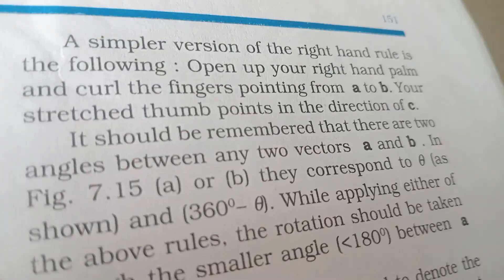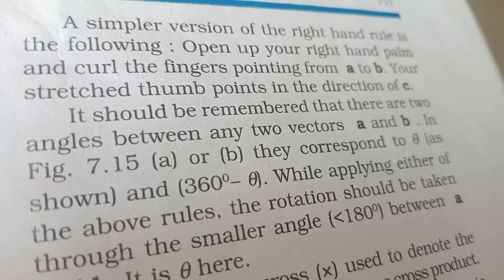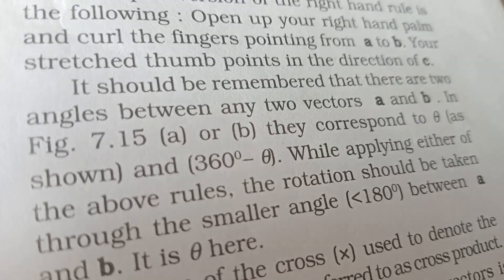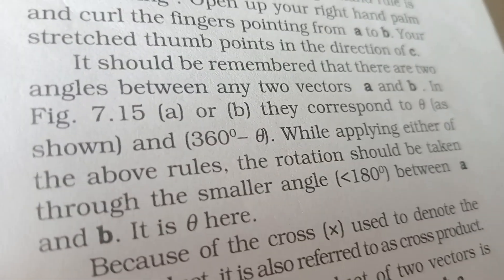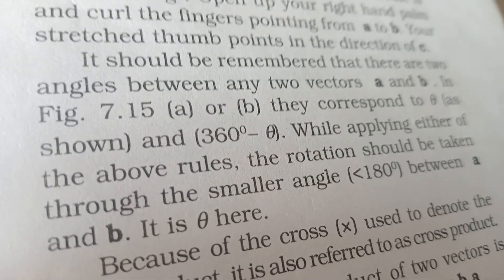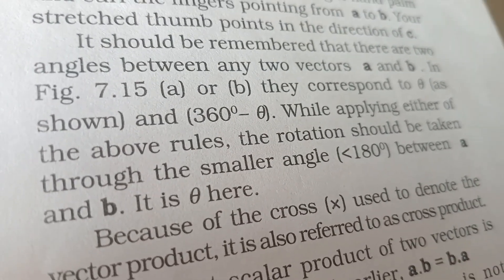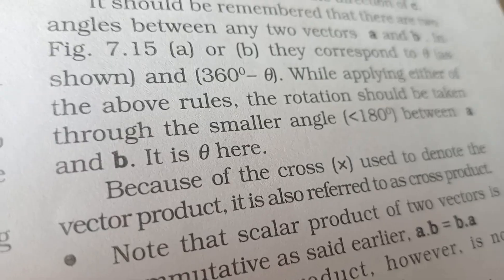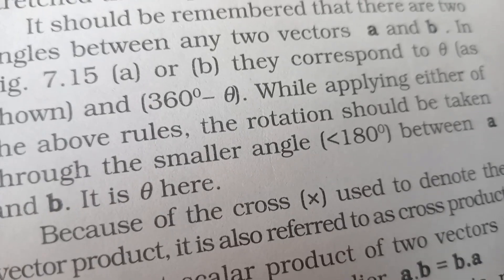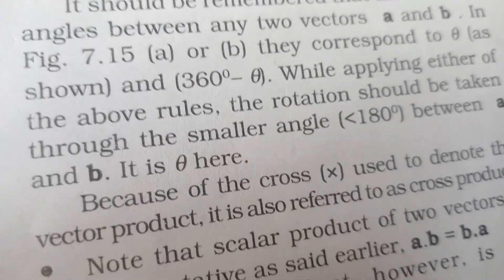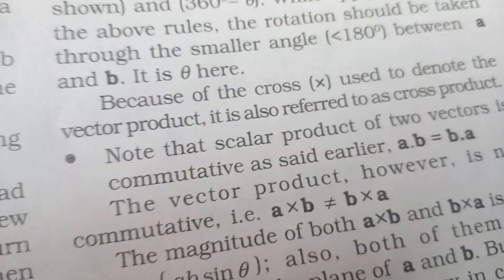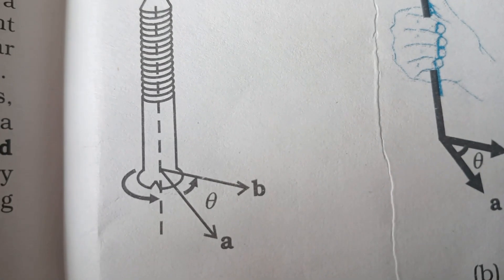A simple version of the right-hand rule: open your right hand palm and curl the fingers pointing from A to B. Your stretched thumb points in the direction of C. Remember there are two angles between vectors A and B corresponding to theta and 360 minus theta. You should take the smaller angle, not the larger one. The rotation should be taken through the smaller angle between A and B.